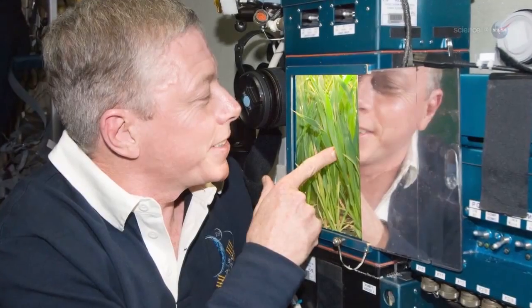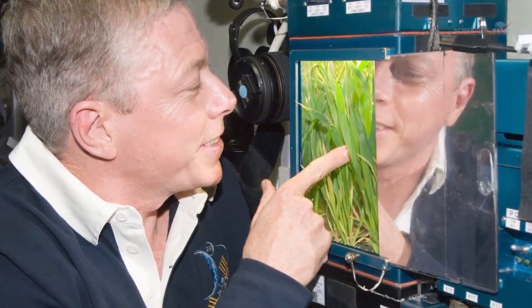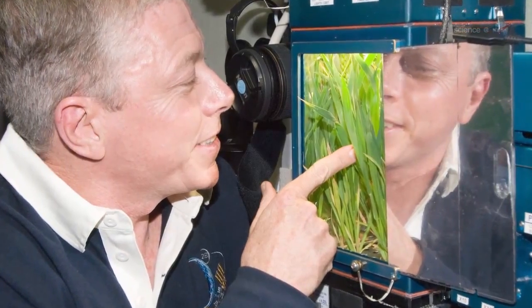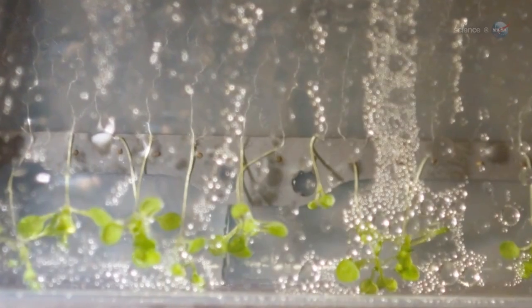Paul and Furl also observed how Arabidopsis used light as a gravity substitute for telling up from down. With lamps shining overhead, roots grew clearly away from the leaves, just like on Earth.